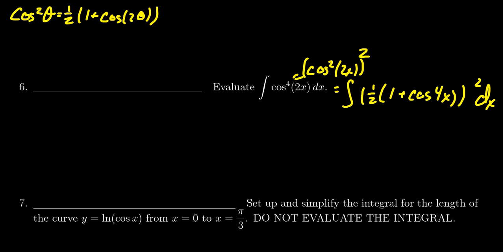So we're going to have to FOIL that out. The 1 half squared gives us a 1 fourth. I'm going to put that in front of the integral there. So we have this 1 plus cosine to the 4x squared. When you FOIL that out, you get 1 plus 2 times cosine of 4x. And then we have also a cosine squared of 4x dx.